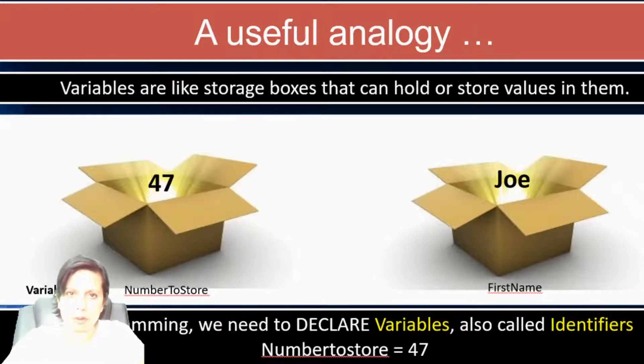A variable is something that we use in programming. It's like a storage box that stores a value. And this value can be a string value. String means text. It could be an integer. An integer is a whole number. And we're going to look at those different types of variables in a preceding lesson. So, remember that.